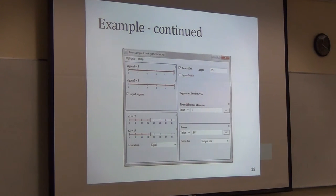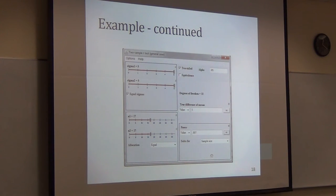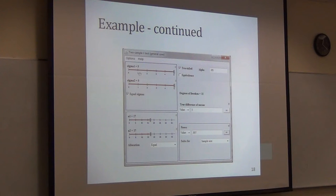I'll demonstrate how we can do this. If you use the website I described, you'll see this kind of window or screen. You can see the two-sample t-test option — that's the methodology to compare two means. I set sigma one and sigma two — the standard deviation for each group — to five. I checked two-tailed, which means the alternative hypothesis is mu one is not equal to mu two.